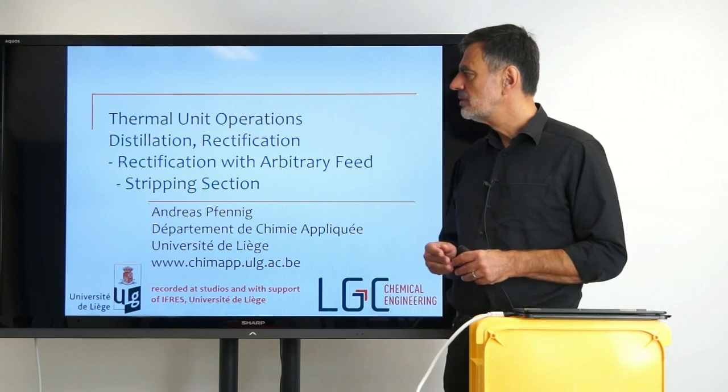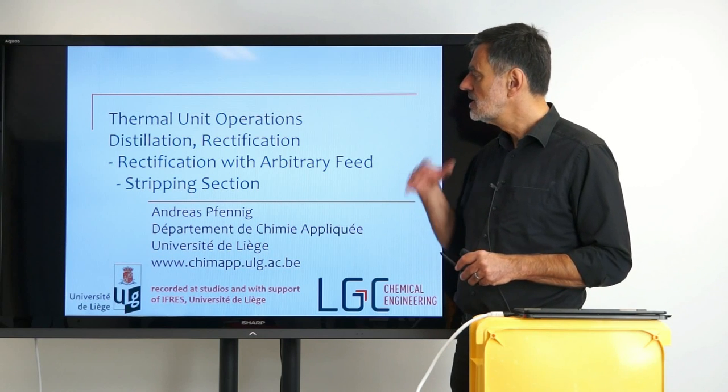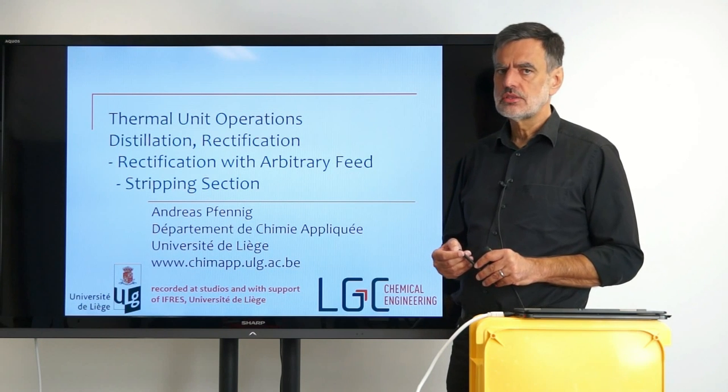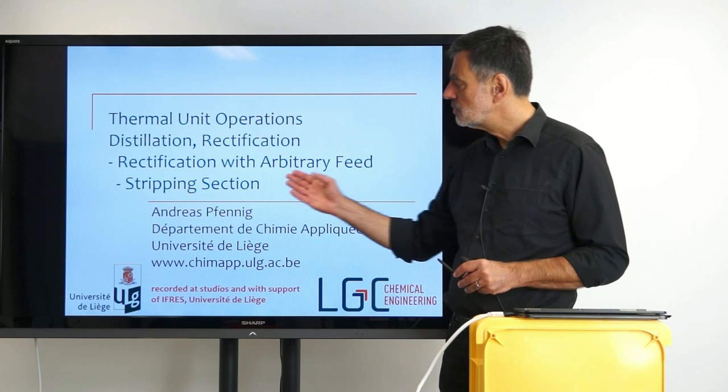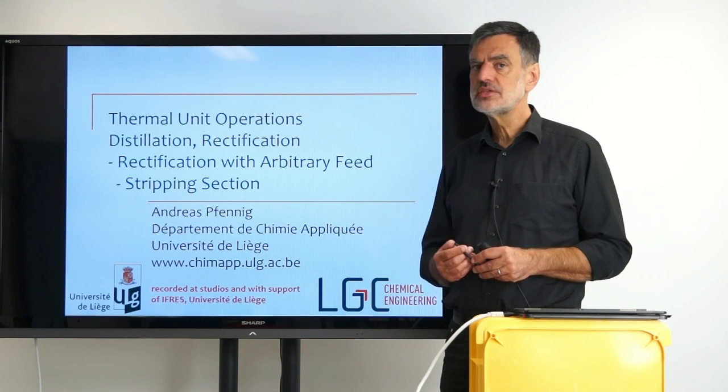Welcome back to this lecture on Thermal Unit Operations. We are still dealing with distillation and rectification. We are also still in the way of deriving the McCabe-Thiele Diagram, and today we want to have a look at the second section of the distillation column, namely the stripping section.